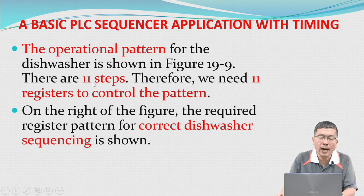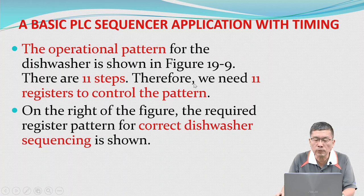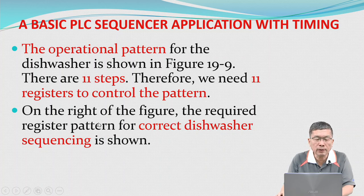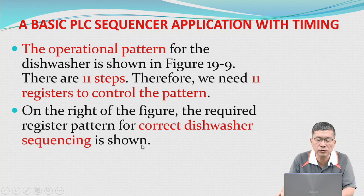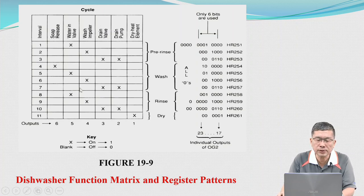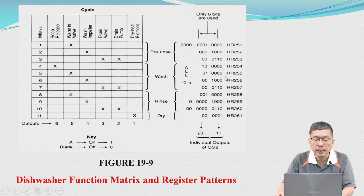There are 11 steps; therefore, we need 11 registers to control the pattern. On the right of figure 19.9, the required register pattern for correct dishwasher sequencing is shown. This picture shows the dishwasher function matrix and the register pattern — this is the function matrix and this is the register pattern. We have rinse, wash, rinse, and dry.